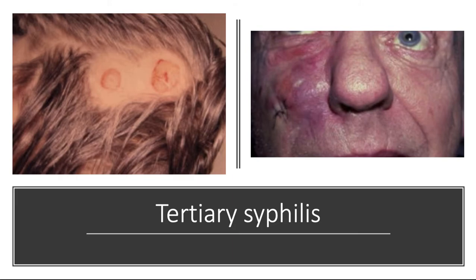Tertiary syphilis is very delayed, occurring decades after the initial infection. Late signs and symptoms can develop 20 to 40 years after the initial infection in up to one-third of untreated cases. The untreated infection can lead to endarteritis, and complications include gumma, cardiovascular, and neurological diseases. Gumma is a solitary granulomatous lesion with central necrosis; gummas typically occur on the skin or bone, but can be found anywhere.